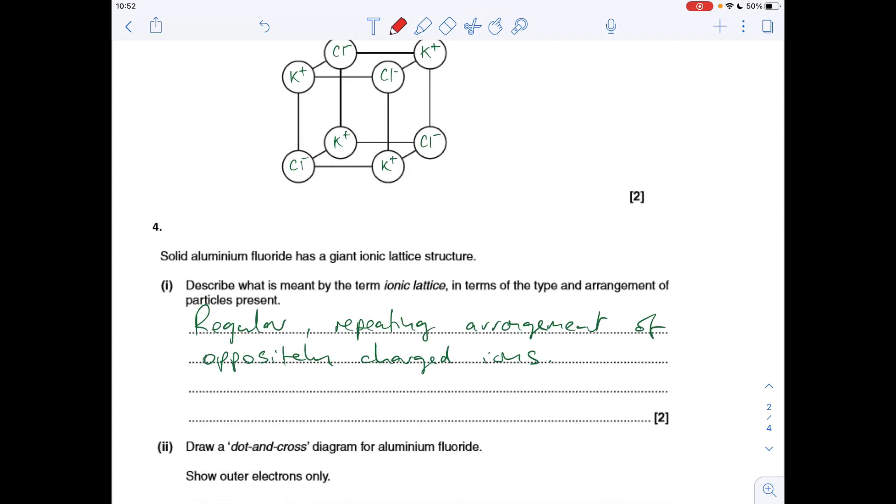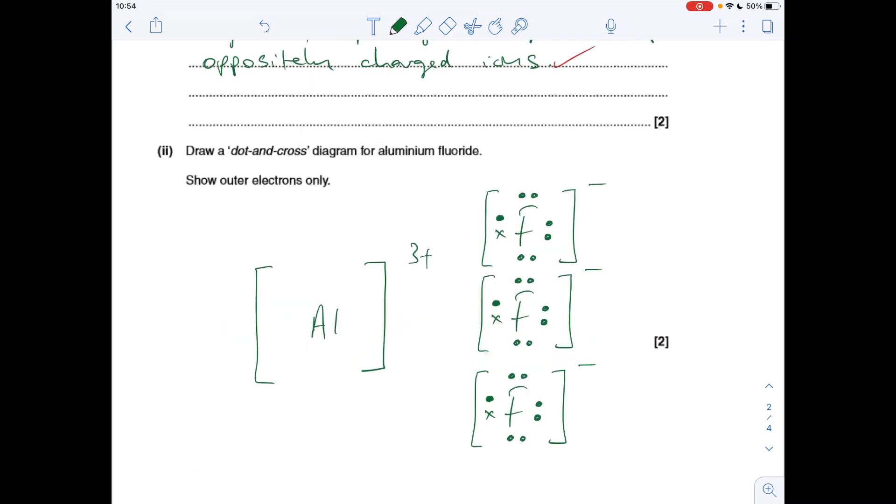Question four, what's meant by the term ionic lattice? The lattice part is the repetition or the regular repeating arrangement, so that statement would get you the first mark, and the fact that it's ionic means we have oppositely charged ions. The next part, notice it doesn't give you the formula for aluminum fluoride, so they are expecting you to know what that is. It contains the Al3+ ion and the F- ion, so the ratio is one Al3+ to three fluoride ions. The marks are scored one for that and one for that.